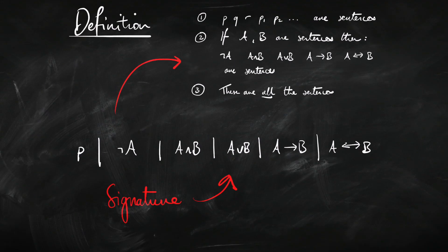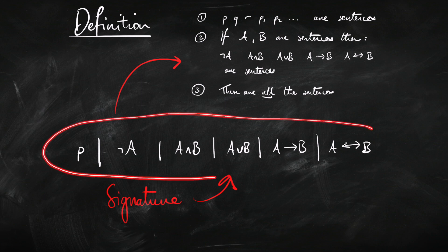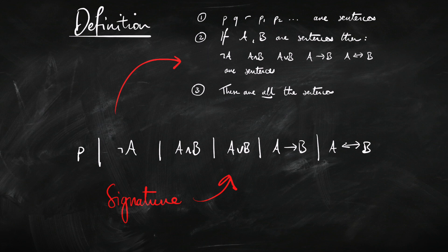Here's a slightly different way of presenting the same information. We can present it like this — sometimes this way of writing down the language is called the signature of the language. What counts as a sentence? It's either a primitive sentence letter, a negation of a sentence, a conjunction (and), a disjunction (or), an implication (if A then B), or a bi-implication (A if and only if B) — these are what count as properly grammatically formed sentences.